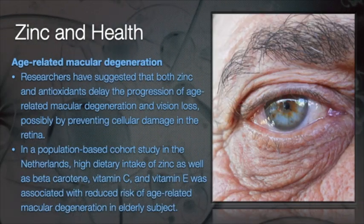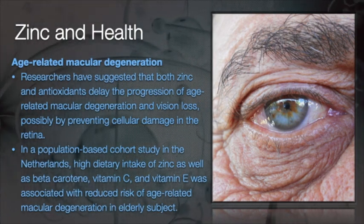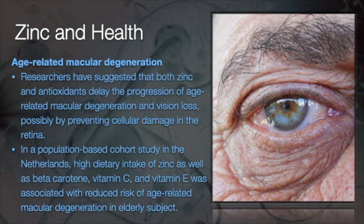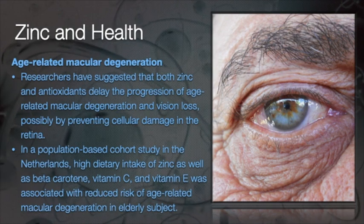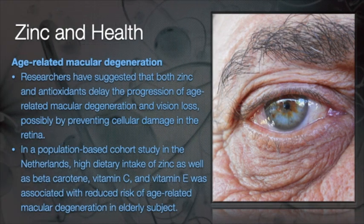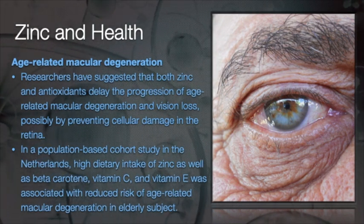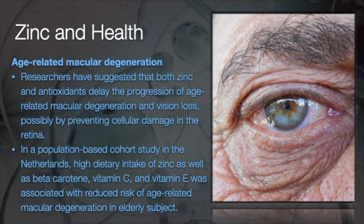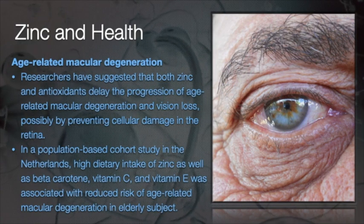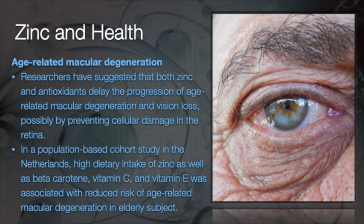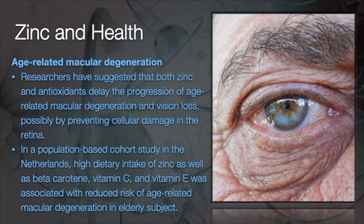Regarding age-related macular degeneration in the eye, researchers have suggested that both Zinc and antioxidants can delay the progression of age-related macular degeneration and vision loss, possibly by preventing cellular damage in the retina. In a population-based cohort study in the Netherlands, high dietary intake of Zinc as well as beta-carotene, vitamin C, and vitamin E was associated with reduced risk of age-related macular degeneration in elderly subjects.